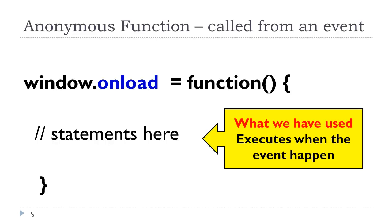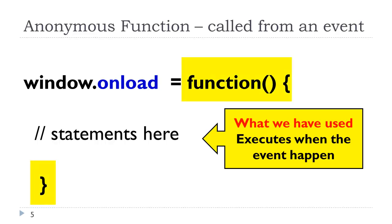This is an example of an anonymous function, and we have been looking at this now for several classes. So here we have window.onload — this is the load event of the window object. We preface the name of the event by 'on'. It is calling an anonymous function; notice the function has no name. All of the statements inside the opening and closing curly braces will be executed when the page loads.